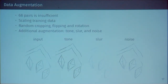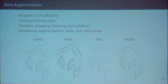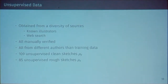With only 68 pairs and a 23-layer fully convolutional network, we did lots of data augmentation: scaling up to eight times, random cropping, flipping, rotation, and sketch-oriented augmentation including tone adjustments, blurring, and Gaussian noise. For the unsupervised data — due to copyright I can't show most of it — it was obtained from diverse sources: known illustrators, web searches, manually verified, all from different authors than the training data, and augmented to roughly 100 clean and 100 rough sketch images each.